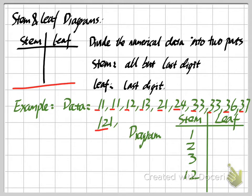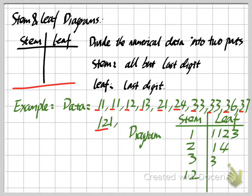Now for the leaf column: for stem 1, we list all its leaves. We have the numbers 1, 1, 2, 3 — four numbers with the same stem of 1. For stem 2, the data are 21 and 24, so we list the leaves as 1 and 4. For stem 3, we list the leaves as 3, 3, 6, 7. And for the last stem, 12, we only have one number, so the leaf is 1.